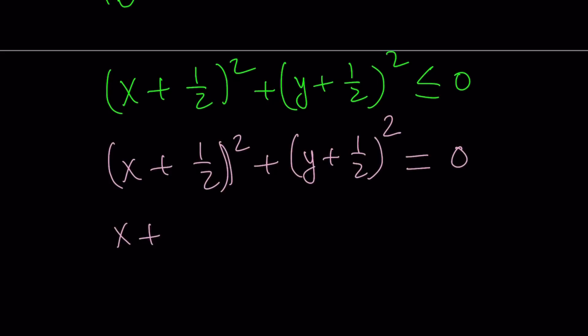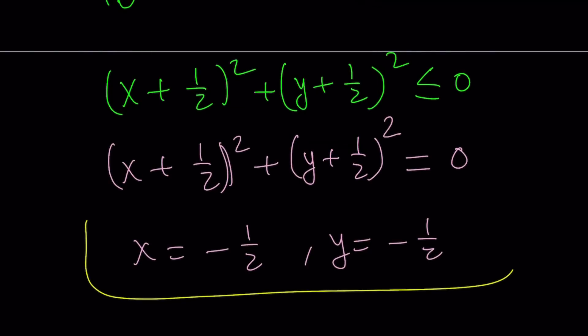And from here, we get the following. x plus 1 half is 0, which means x equals negative 1 half. And y equals negative 1 half. And this brings us to the end of this video.